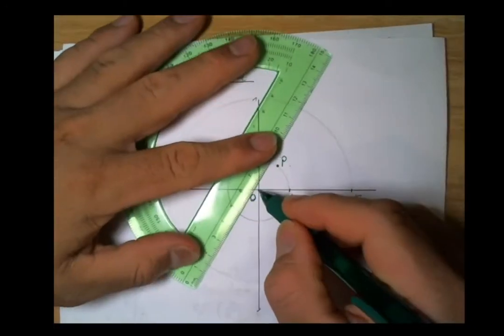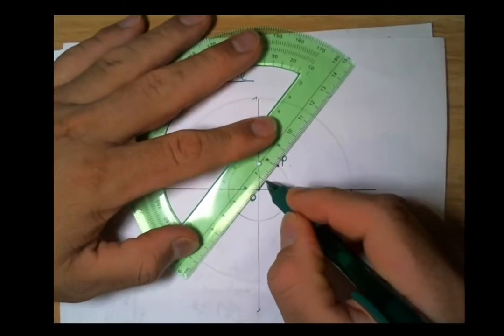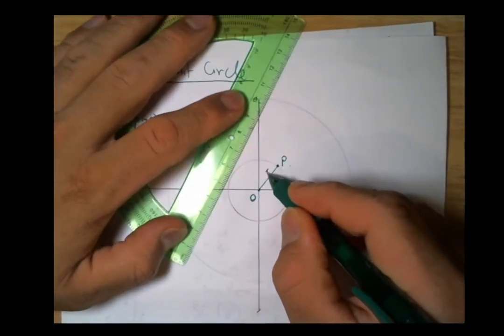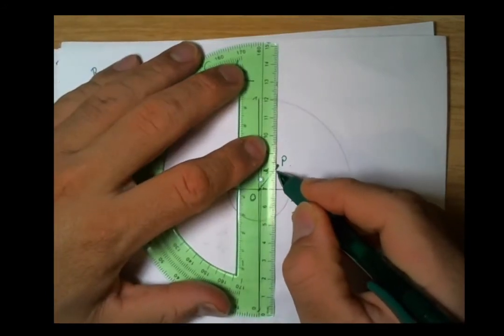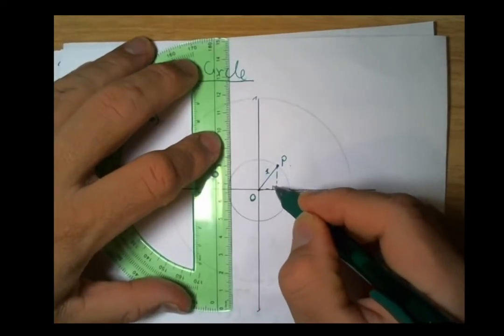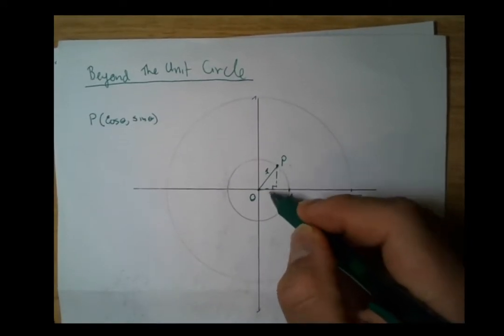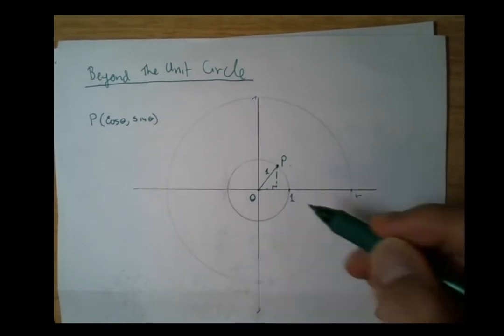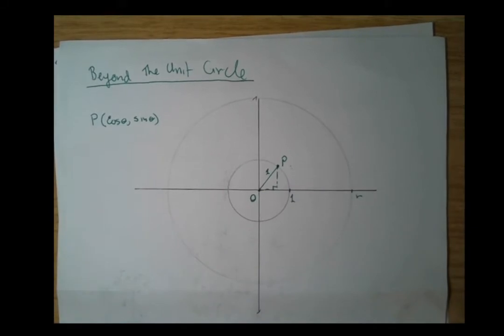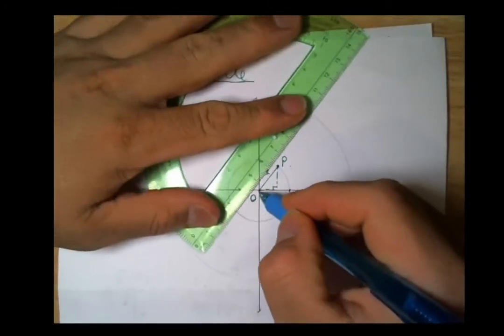P has x-coordinate cosine theta and y-coordinate sine theta. The hypotenuse of this right triangle is one, by dropping this diagonal. The length along the vertical is sine theta and along the horizontal is cosine theta.